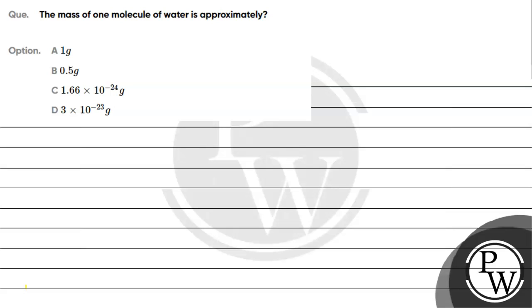Hello guys, let's read this question. The question says the mass of one molecule of water is approximately: option A is 1 gram, option B is 0.5 gram, option C is 1.66 × 10⁻²⁴ gram, option D is 3 × 10⁻²³ gram.